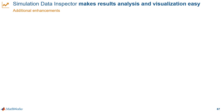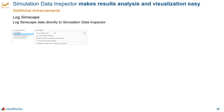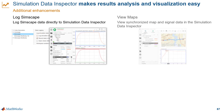What else can you do with Simulation Data Inspector? If you're doing physical modeling, you can stream Simscape variables directly by checking a box in the model settings. If you're working with maps, maybe for automated driving applications, you can use GPS coordinates to display location on a 2D map.